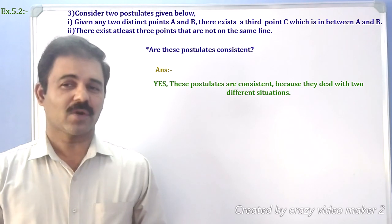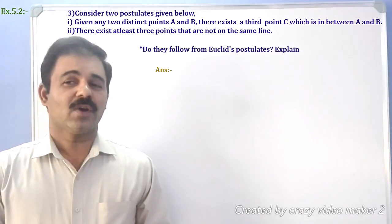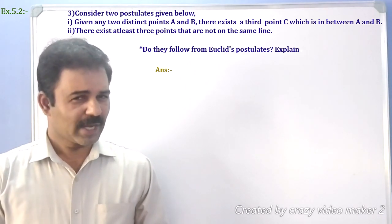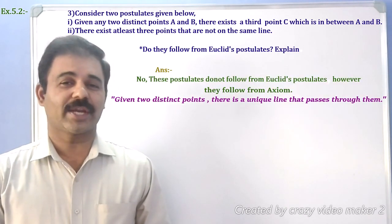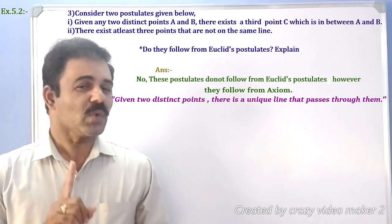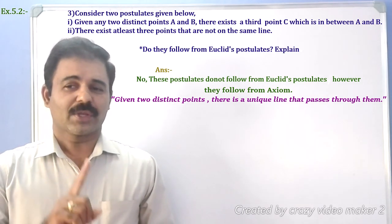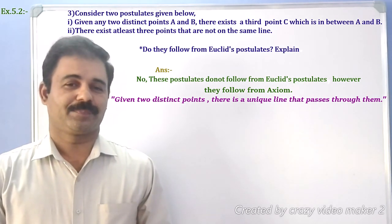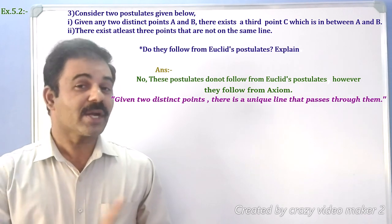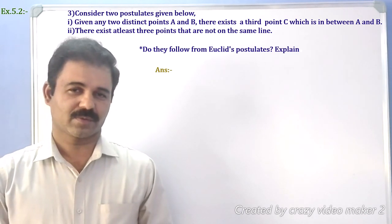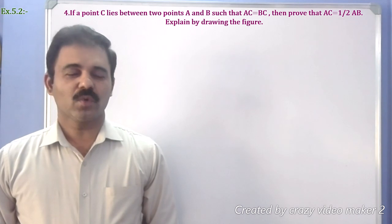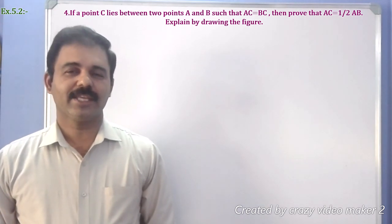Now, the third part: do they follow from Euclid's postulates? No, they do not follow from Euclid's postulates, but they do follow from Euclid's axioms. The relevant axiom is: given two distinct points, there is a unique line that passes through them.